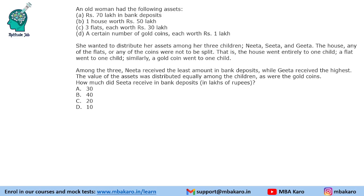Hello everyone, welcome to Aptitude Jab. This set from CAT 2017 Slot 2 DILR says that an old woman had the following assets: 70 lakhs in bank deposit, one house worth 50 lakhs, three flats each worth 30 lakhs, and a certain number of gold coins each worth 1 lakh. The number of gold coins is not given. She wanted to distribute her assets among her three children: Nita, Sita and Geeta.